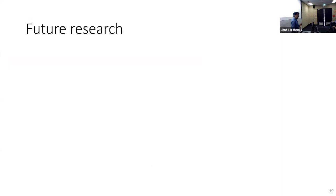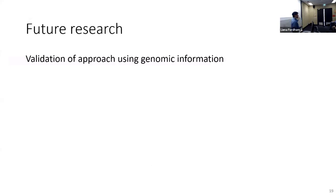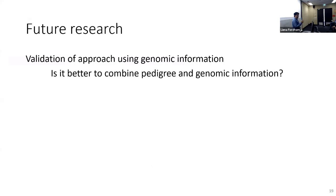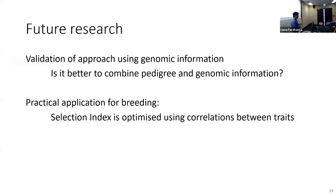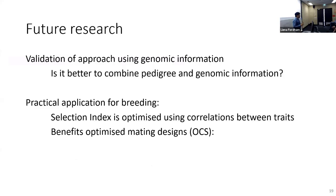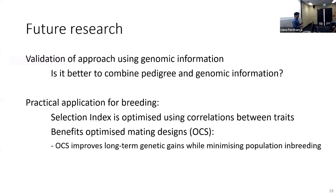In my PhD, I want to validate this approach using genomic information. Literature says I should improve further using genomic data, and I want to know what will happen if I combine two sources of information — pedigree and genomic — in what's known as an H (hybrid) BLUP analysis. The practical implications for breeding include a selection index that comes from accurate breeding values, optimized using correlations. I can create an optimized selection scheme such as optimal contribution selection (OCS), which improves long-term genetic gain and retains variability in the population.